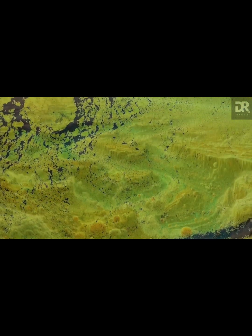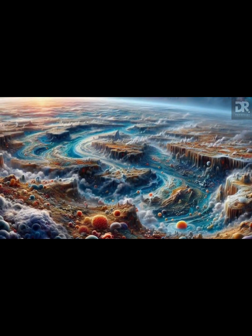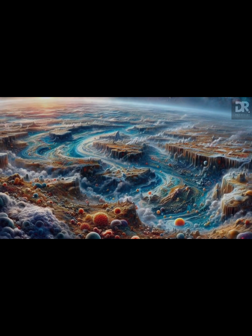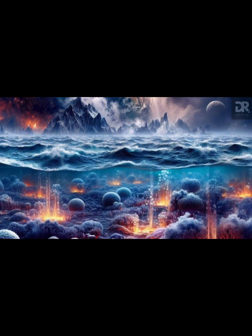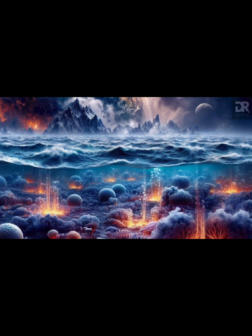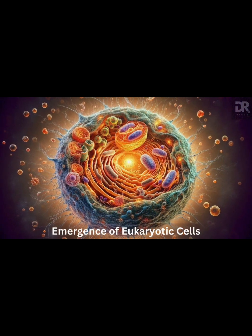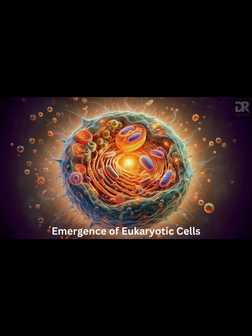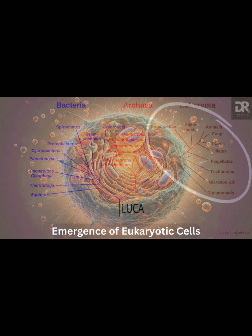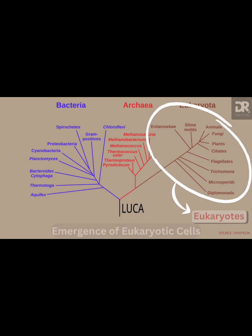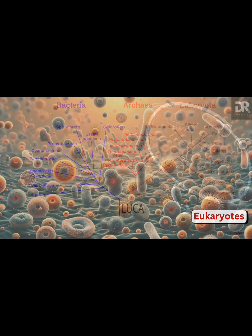It allowed for more efficient energy use, setting the stage for complex life. Imagine a primordial ocean teeming with simple prokaryotic life, where the first eukaryotic cells emerged, distinguished by their complex internal structures and nuclei. These pioneering cells, appearing around 2.1 billion years ago, mark a significant evolutionary leap, thriving in the oxygen-rich waters.